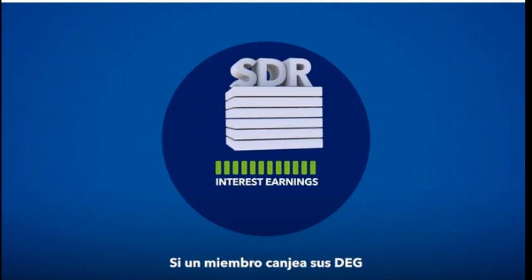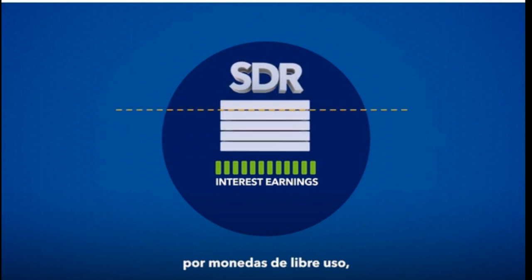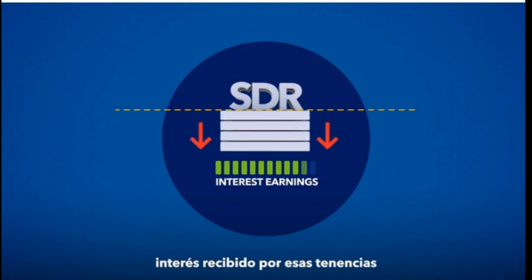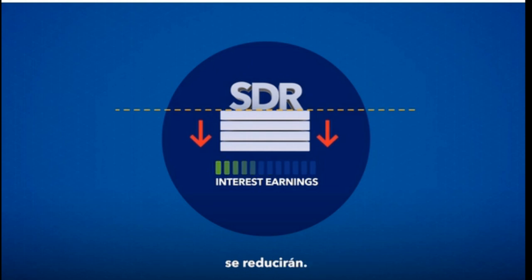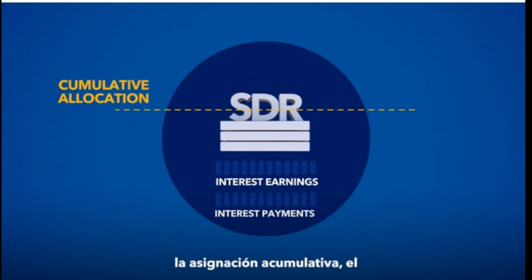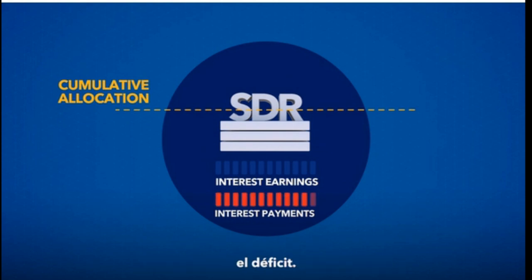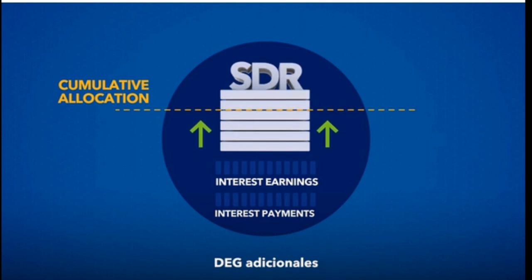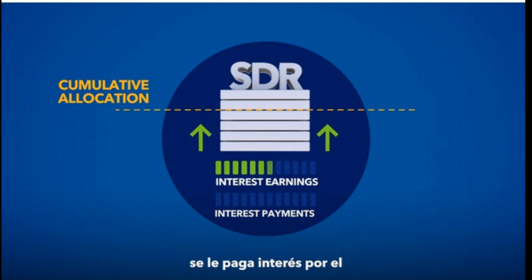If a member exchanges its SDRs for freely usable currencies, its SDR holdings and the interest earned on those holdings will fall. If the holding falls below the cumulative allocation, the member has to pay interest on the shortfall. Likewise, if a member provides freely usable currencies in exchange for extra SDRs, it gets paid interest on the surplus of SDR holdings.